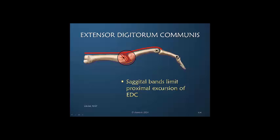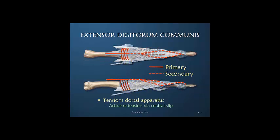We talked about how the sagittal bands limit the proximal excursion of the extensor digitorum communis. That means that before any power can be transmitted through the central slip into the dorsal apparatus, the power here first must occur. So the extensor digitorum communis is usually busy at the metacarpal phalangeal joint and therefore doesn't have a great deal left to offer for full interphalangeal joint extension. In this schematic drawing, the solid lines represent what I consider to be a primary influence by the extensor digitorum communis.